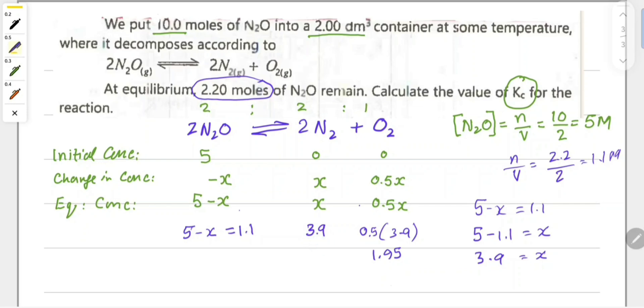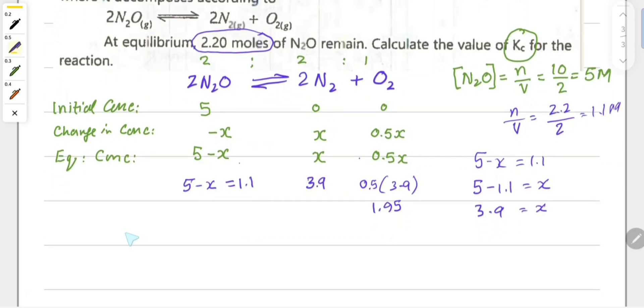To find Kc, we write: Kc equals molar concentration of nitrogen gas squared times molar concentration of oxygen gas, divided by molar concentration of N2O squared.